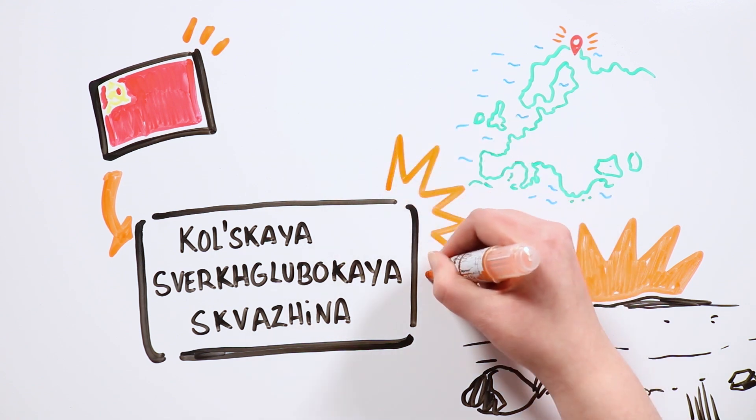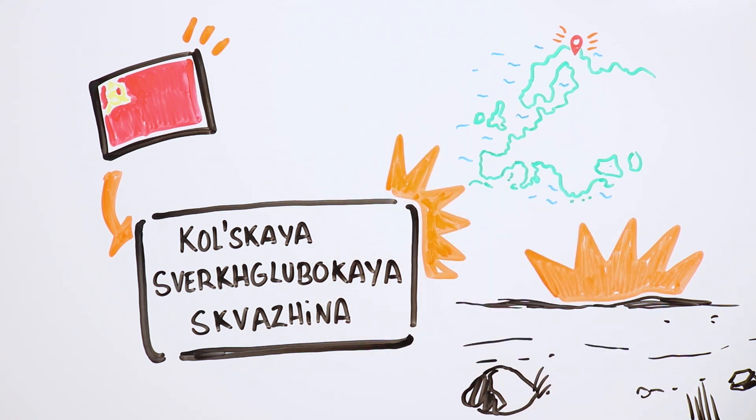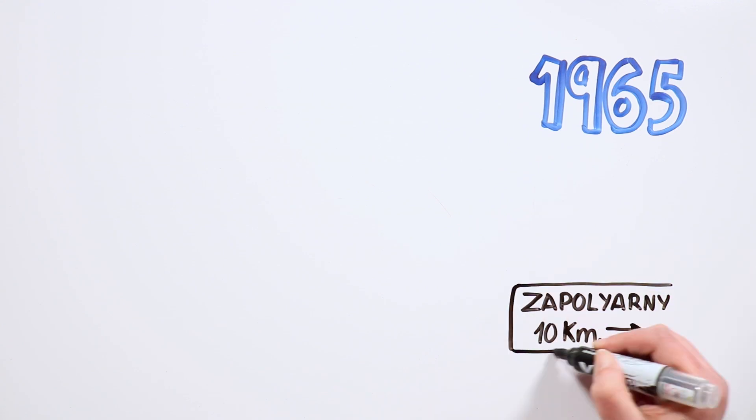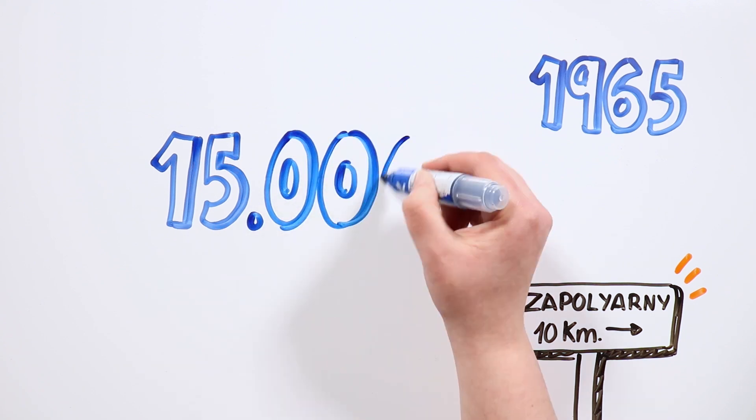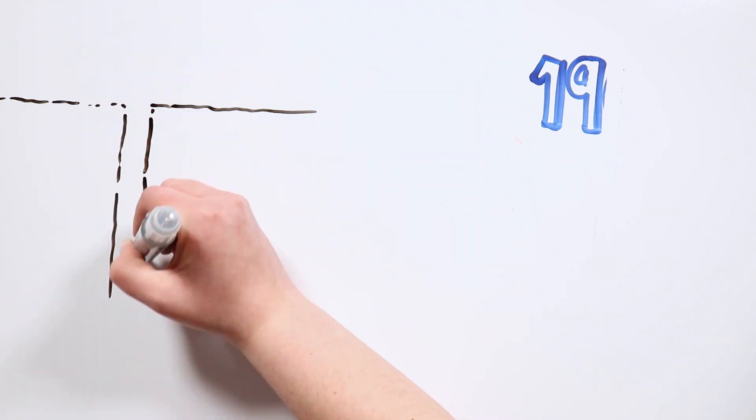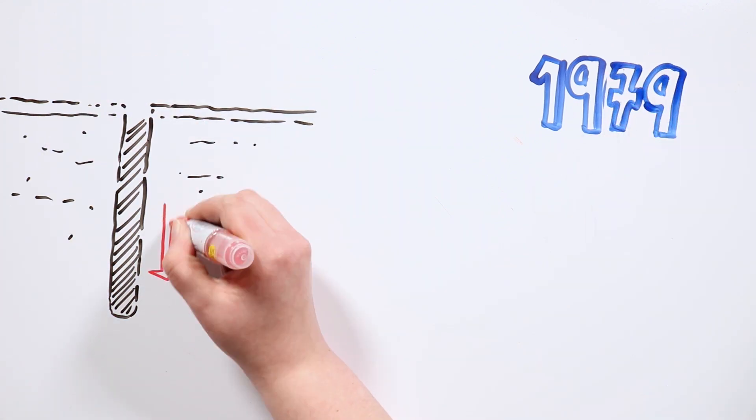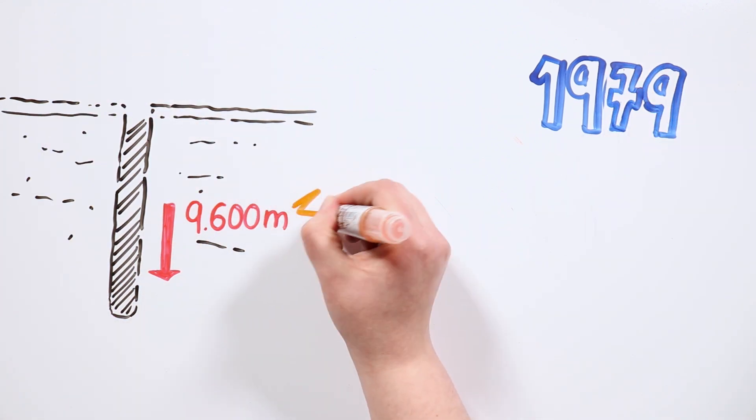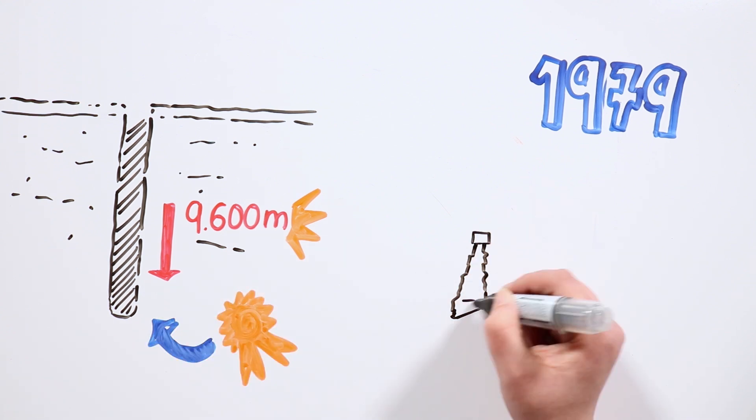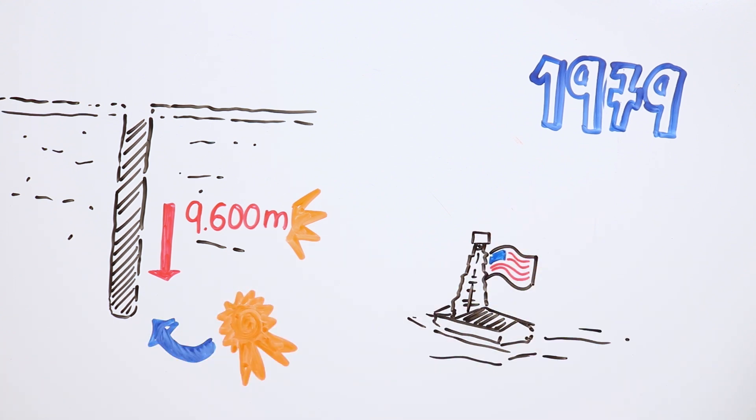And they managed to go farther than any human ever had. In 1965, the exact location was chosen, 10 kilometers west of the city of Zapolyarny, and the ambitious goal was set to reach 15,000 meters in depth. The work was slow and costly, and it wasn't until 1979 that they reached 9,600 meters, breaking the record for the world's deepest hole, which had been held by the Bertha Rogers Oil Well in Oklahoma, USA.